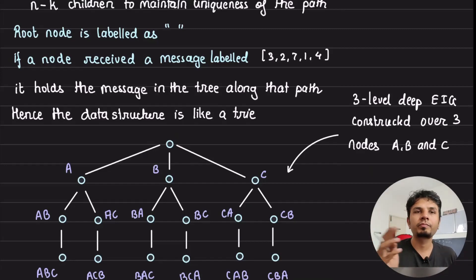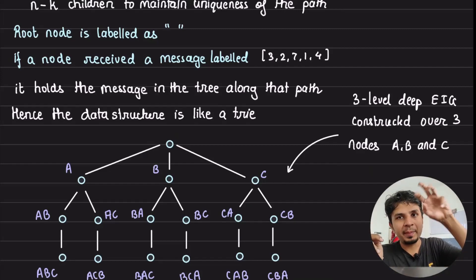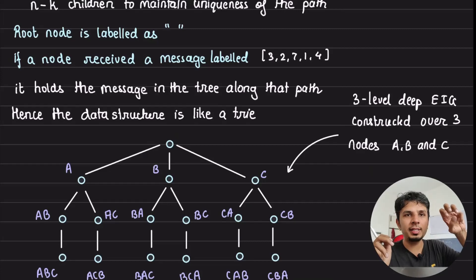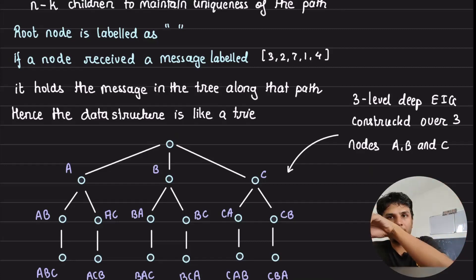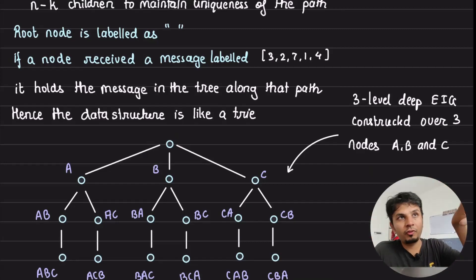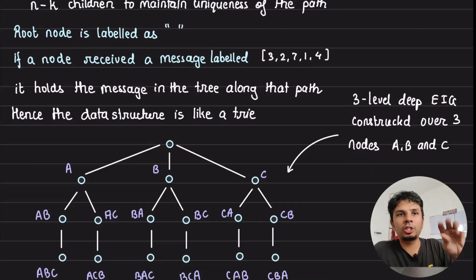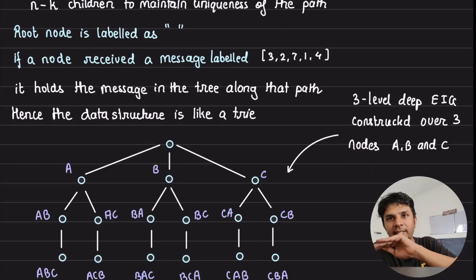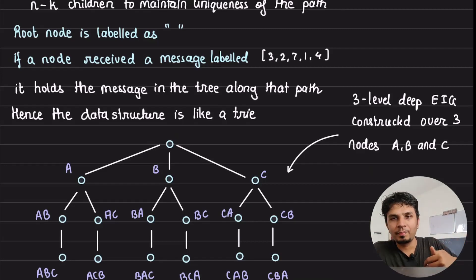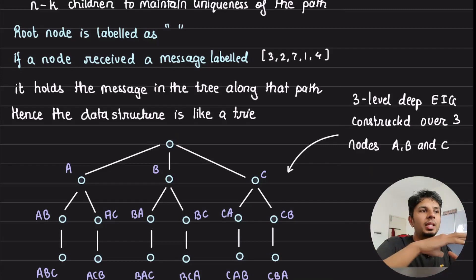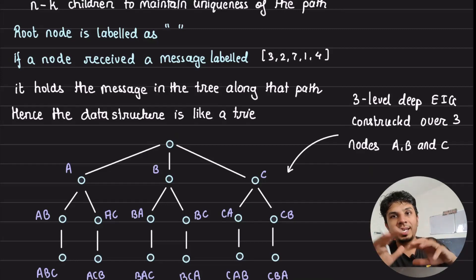The idea of this construction is that the root node is labeled as an empty string. Then its children are A, B, and C. A's children at the next level would have two children: A-B and A-C. B will have two children: B-A and B-C. C will have two children: C-A and C-B. Then A-B will have one child A-B-C, A-C will have one child A-C-B, and so on. This way we cover the entire permutation range of length K at level K in the EIG tree. This is the exponential information that we will be gathering across the network.